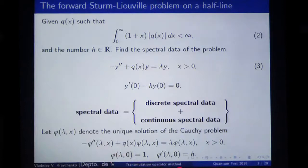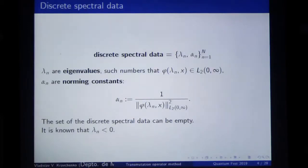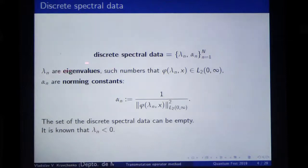It is unique and it exists. I denote it by phi. In terms of this phi, what are these spectral data? The discrete spectral data — if there exists a discrete spectrum — means the following: there exist some values of lambda called eigenvalues such that the corresponding solution phi of the Cauchy problem will belong to L2 on the half line.